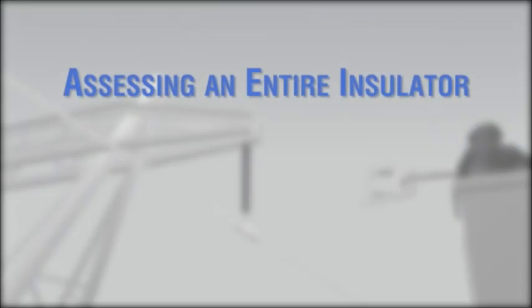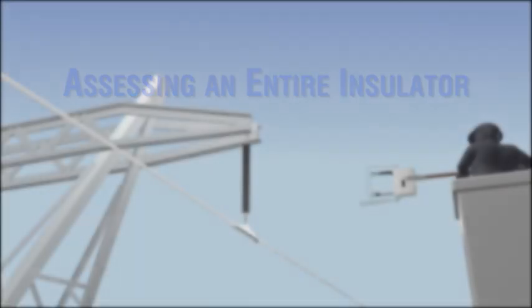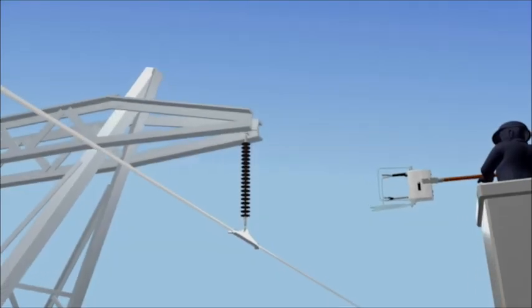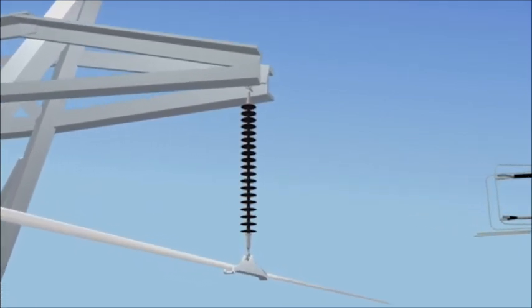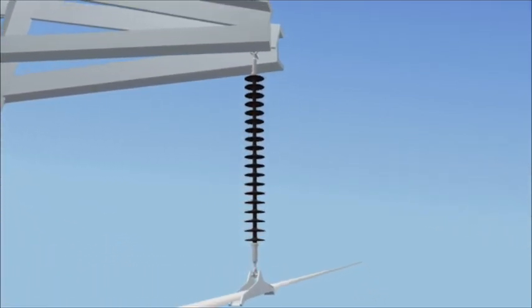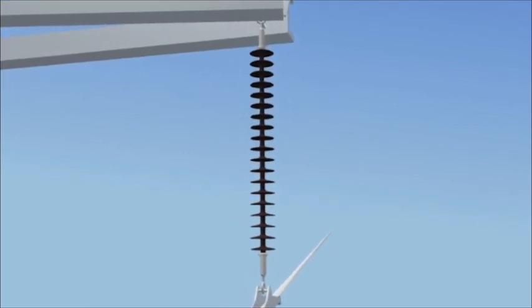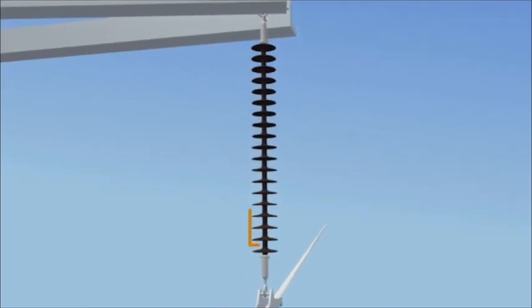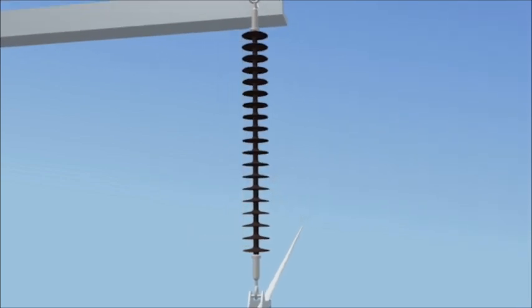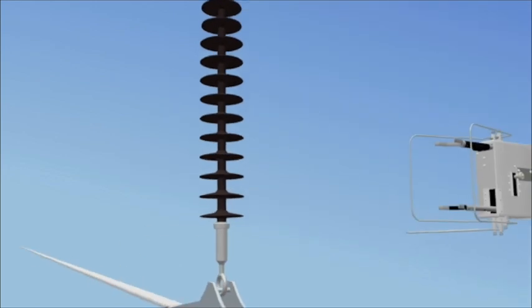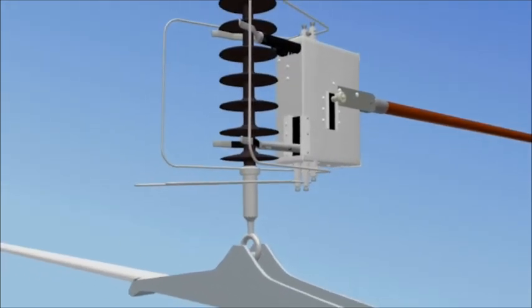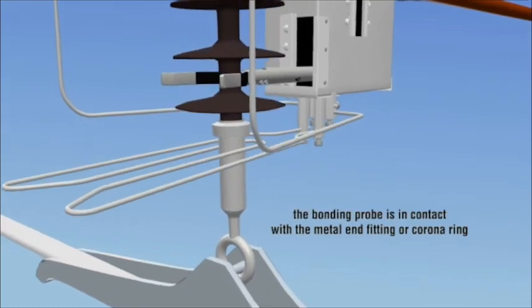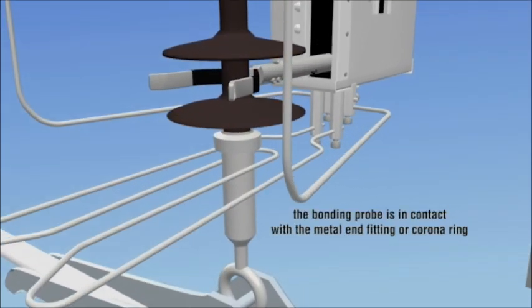Assessing an entire insulator: Procedures and practices differ between utilities, so the following generic approach is intended to provide a basic overview rather than a detailed procedure. An insulator is assessed in 5 to 6 inch overlapping increments. The first measurement is usually made closest to the energized end fitting. It is important when measuring this section that the bonding probe is in contact with the metal end fitting or corona ring.